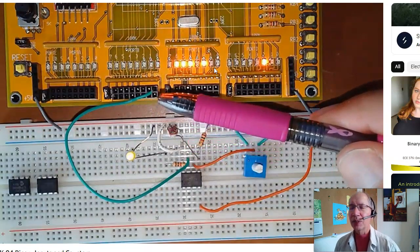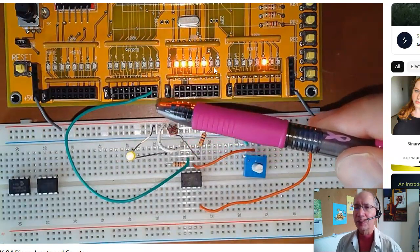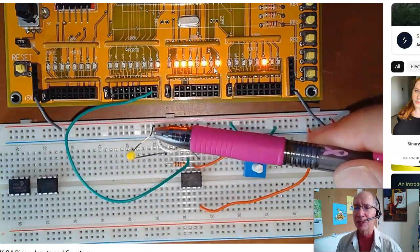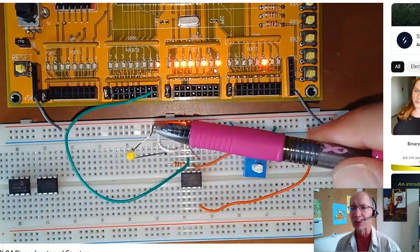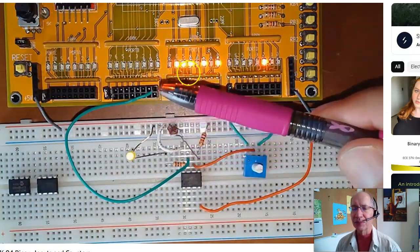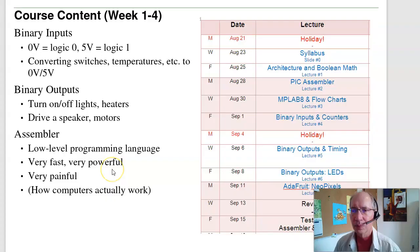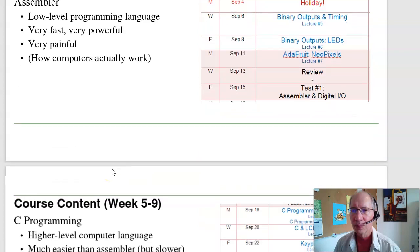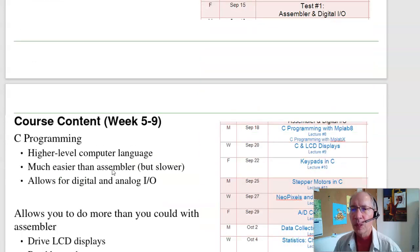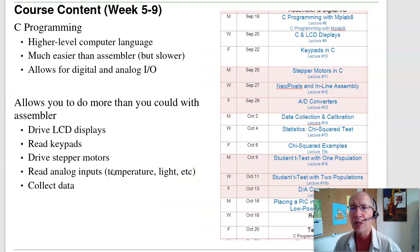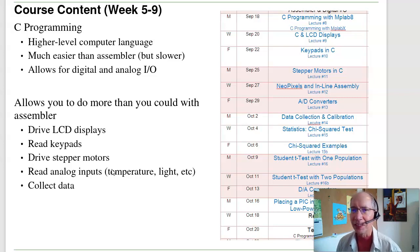I can build a counter so I can measure how many times the refrigerator door is opened overnight. One of the problems with assembly is it's really powerful, but it's also really hard to do anything. I call it like pulling teeth.